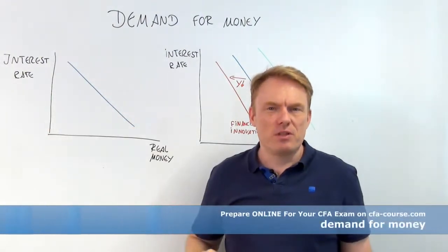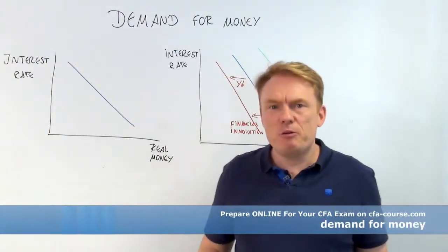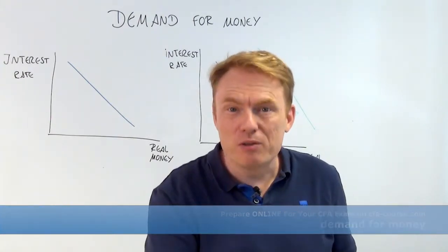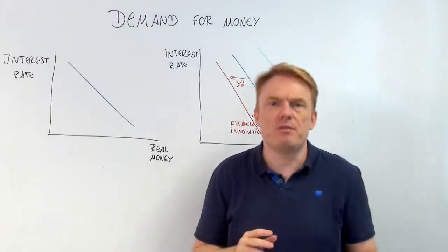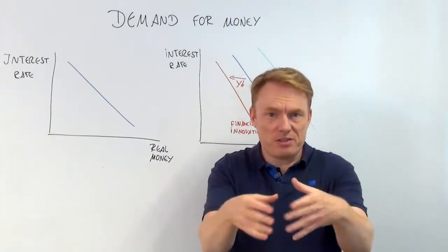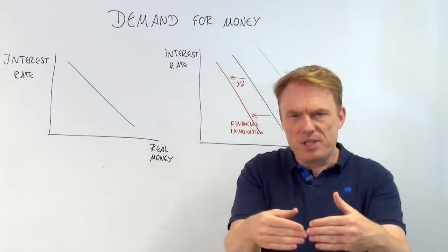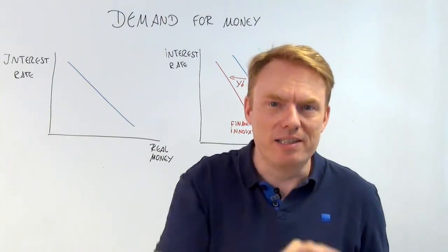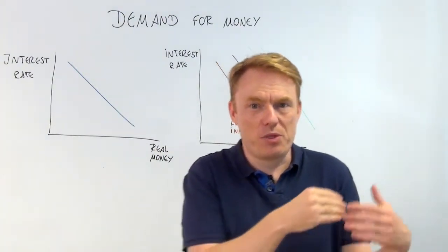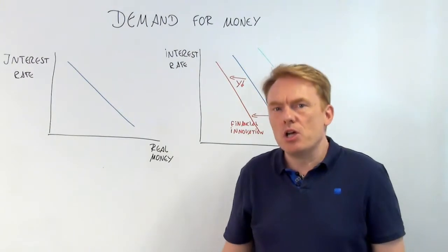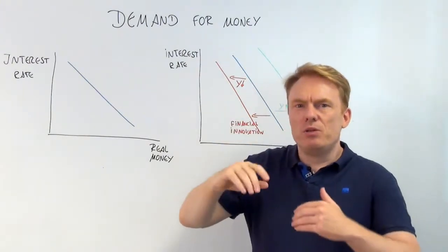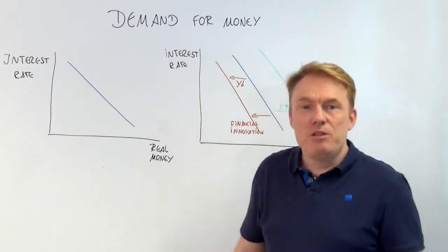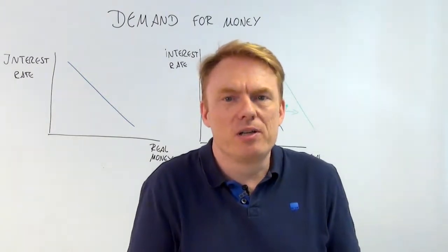The demand for money is dependent on the interest rate. For example, take your bank account: if you deposit money and get three percent per year, but then the rate rises to five percent per year, you'll deposit more money. So if the interest rate rises, you want to deposit more money in your bank account and have less currency in your pocket.